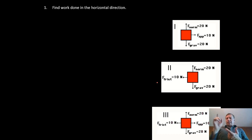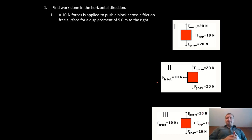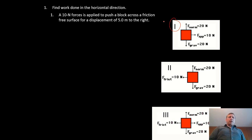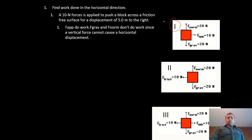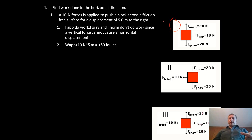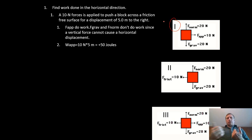In example one, a 10-newton force is applied to push a book across a friction-free surface for a displacement of 5 meters to the right. The work done is force times displacement: 10 N × 5 m = 50 joules. That's the work done in the direction the force is applied.